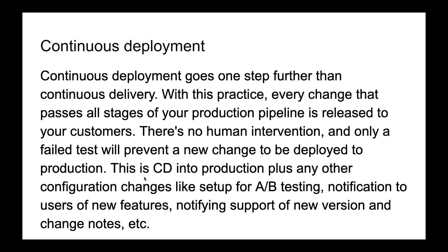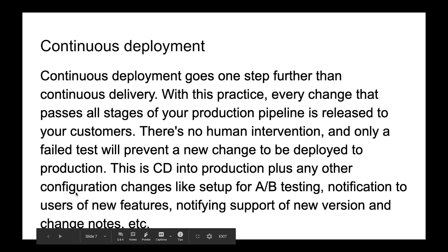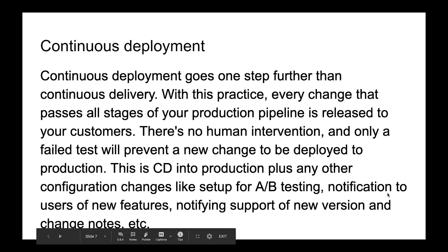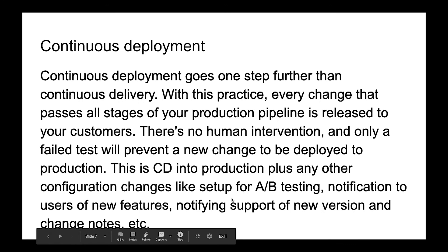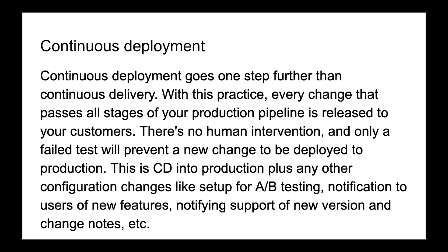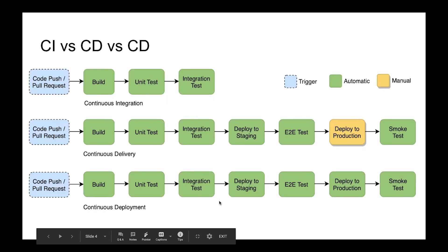After continuous deployment there might be some additional steps in our pipeline. For example, we can make configuration changes like setting up A/B testing, we can send notifications to users about new features, notify support of a new version or other changes, and send release notes. There are a lot of different steps we can do after the code is released to production. That's the schema about the difference between continuous integration, continuous delivery, and continuous deployment.